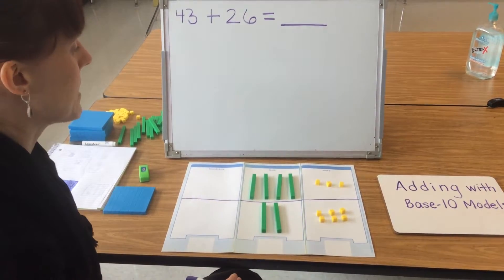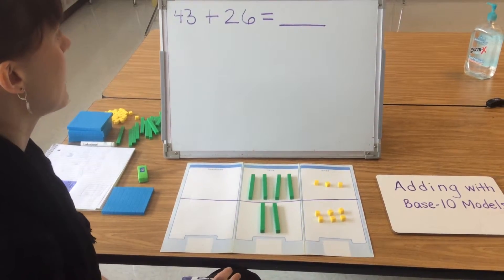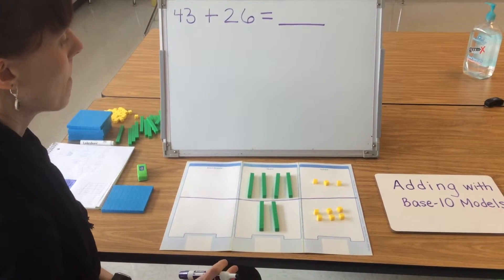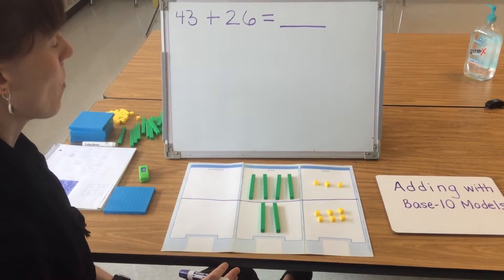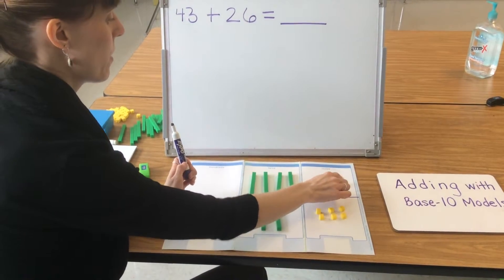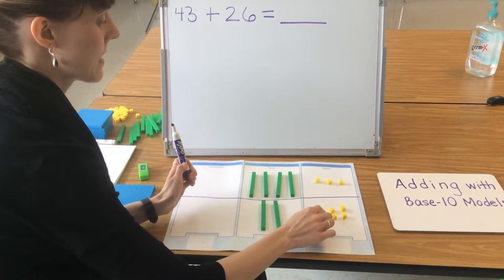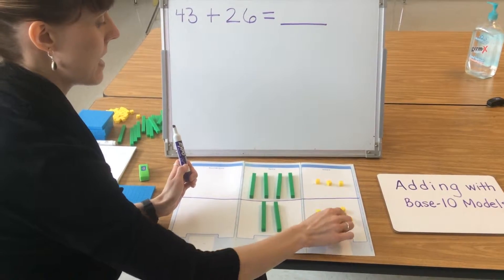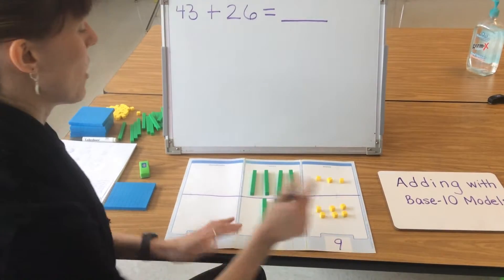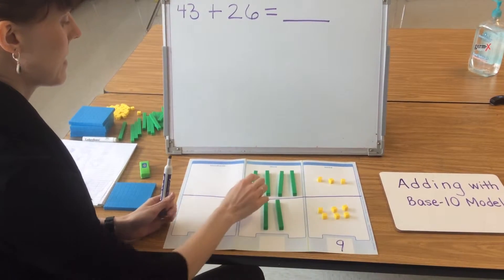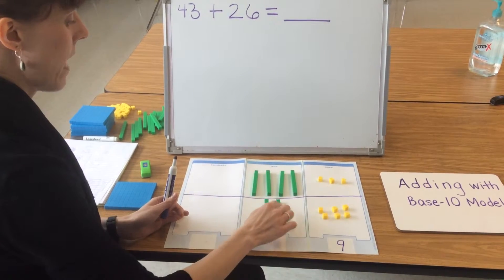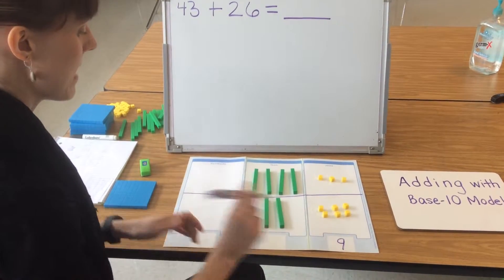After I've modeled both quantities, I'm ready to count to find the total. I always start by counting my 1s first: 1, 2, 3, 4, 5, 6, 7, 8, 9 ones. After I count my 1s, I count my 10s: 1, 2, 3, 4, 5, 6 tens.